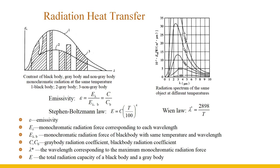Radiation obeys the Stefan-Boltzmann law: the total radiation capacity of a black body or grey body is proportional to the fourth power of the absolute temperature of its surface. The radiation spectrum of the same object at different temperatures is different; as the temperature increases, the short-wave component increases. The wavelength corresponding to the maximum monochromatic radiation is given by Wien's law: λ_max = 2898 / T, where T is the absolute temperature of the object surface.